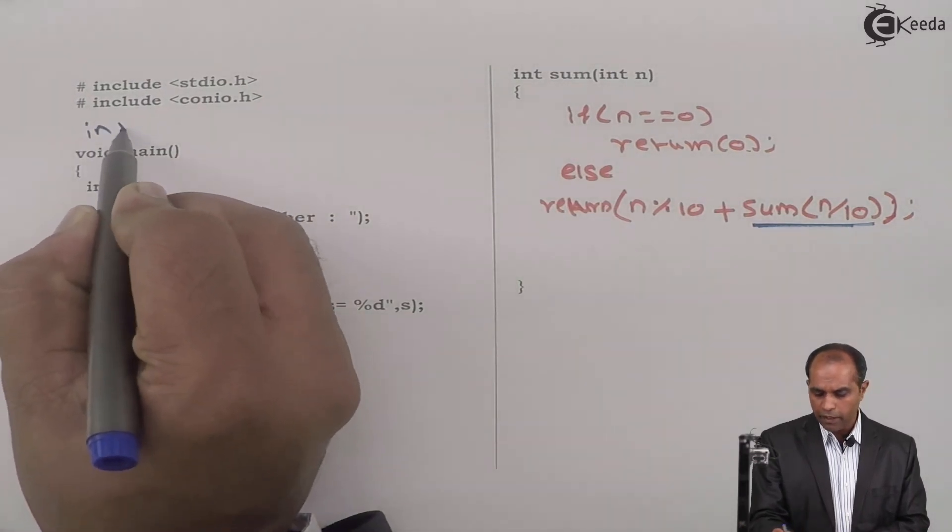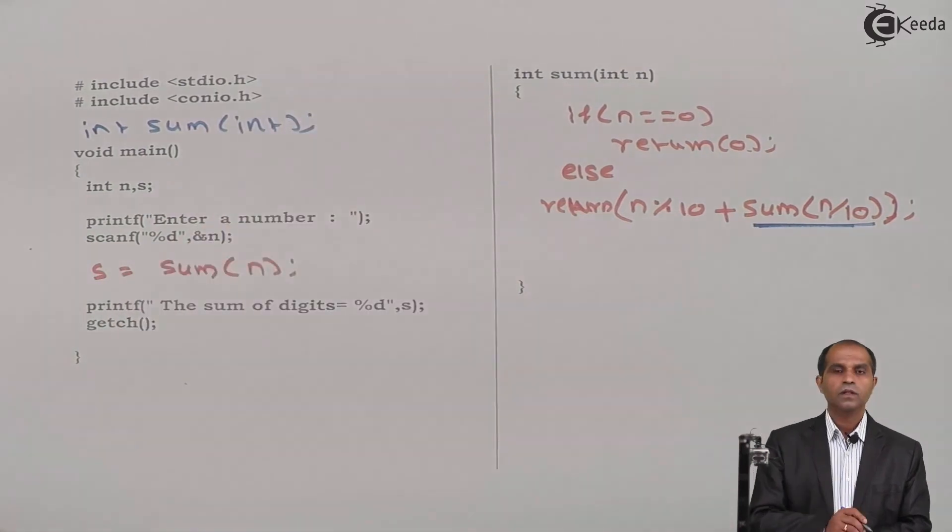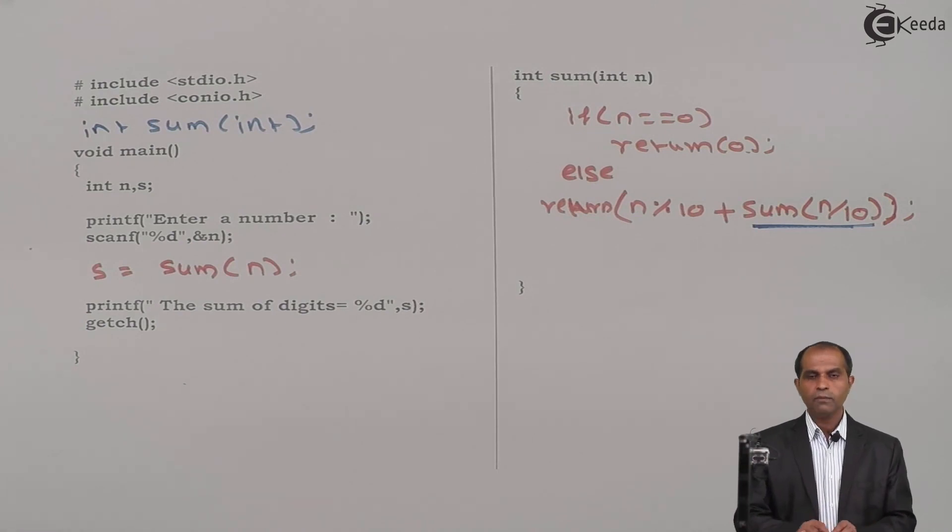We'll use that property and implement this particular function. If you feel that the prototype has to be written, prototype is what? Int sum and then int. So the prototype, the call and this particular definition. So follow the ladder diagram with this particular example. Keep both things next to one another and then implement this particular function. Thank you.